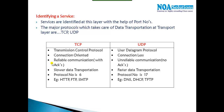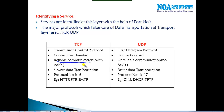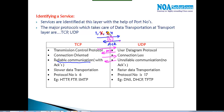TCP supports reliable communication with acknowledgements. For example, if I send packets one, two, three, four, the receiver sends acknowledgements back. Only after receiving all four acknowledgements will the sender transmit the next batch. If any packet gets dropped, the receiver can report — based on sequence numbers — which packets it didn't receive, such as two and three, and request a resend.